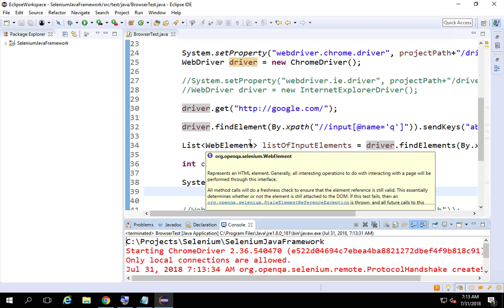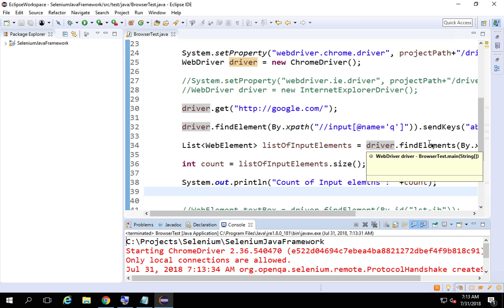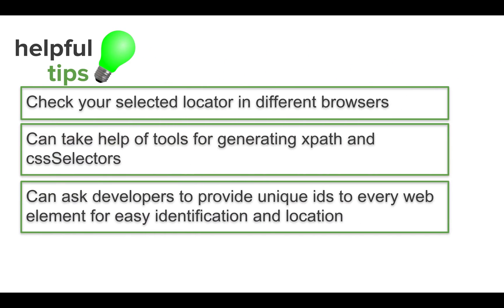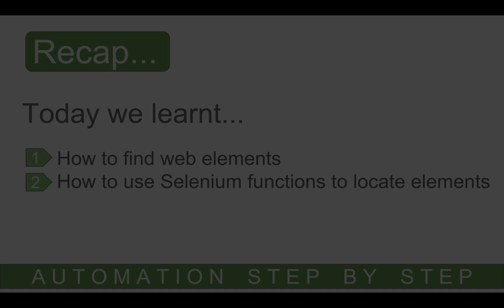These are the very basics, and if you get the basics correct, it will be very useful when you move to higher-level Selenium concepts. Some useful tips: check your locators on multiple browsers to ensure they work across all browsers you intend to use. You can take help from tools like Crowpath and Escree, create custom XPath, and if your application is under development, ask developers to provide unique IDs to every web element, which makes identification easier.